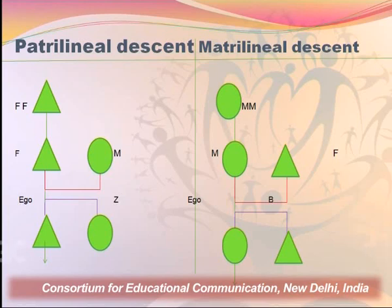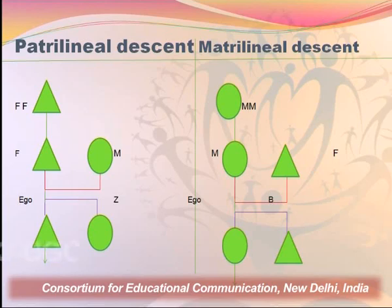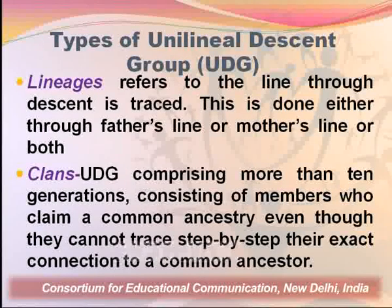Coming to the diagram on the right, we see that circles are connected through a straight line. There are two lines — one upward, which shows the relation between mother and father, and a downward blue line which tells us about the relation between the ego — which here could be the circle — and her brother. So the line of descent is through the female.